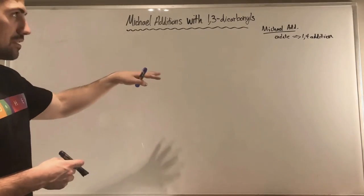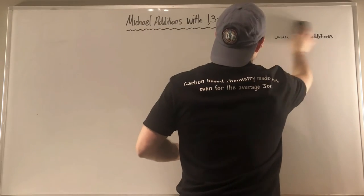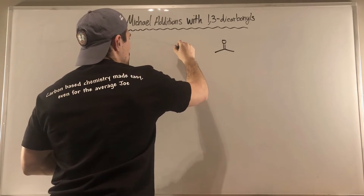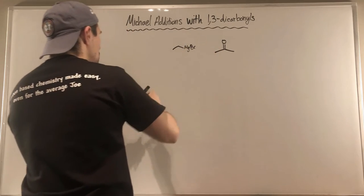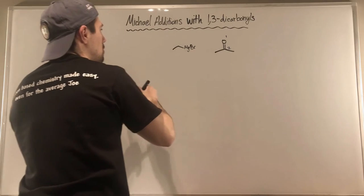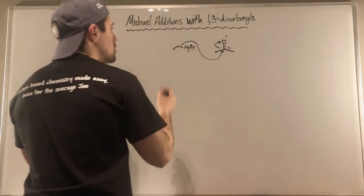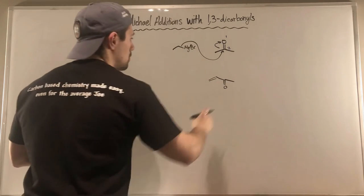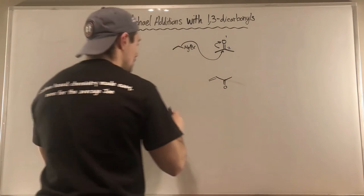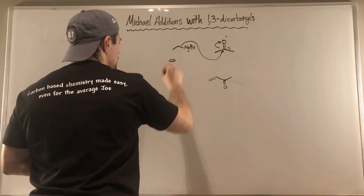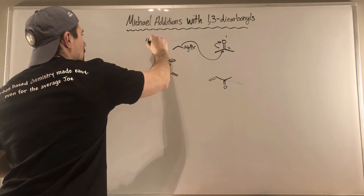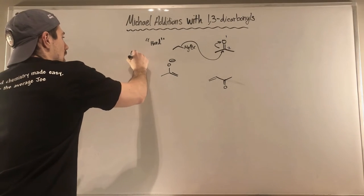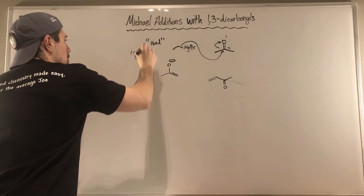The general principle with a Michael addition is that we're doing a 1,4 addition. If we had a simple carbonyl and an ethyl Grignard, we know with a carbonyl we can do a 1,2 addition — adding straight to the carbonyl carbon. With a longer conjugated system like a 4-carbon enone, a Grignard is considered a hard nucleophile, and hard nucleophiles do 1,2 additions straight to the carbonyl carbon. With softer nucleophiles, we can do 1,4 additions instead.